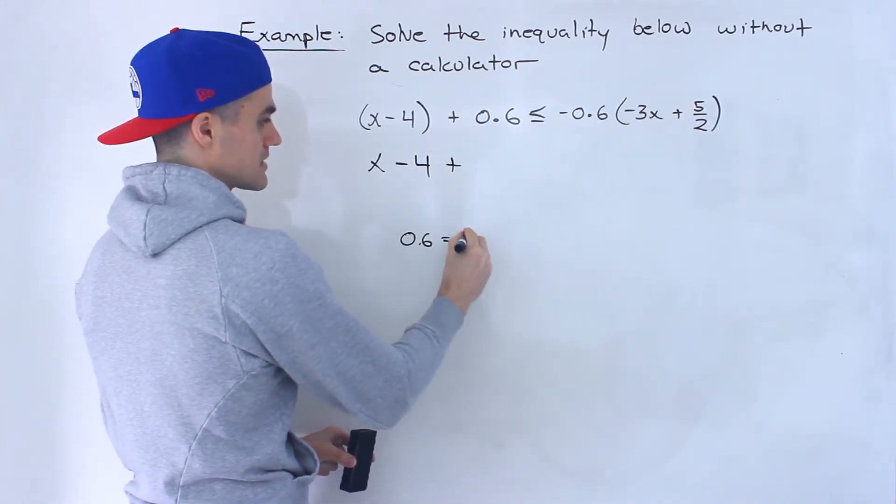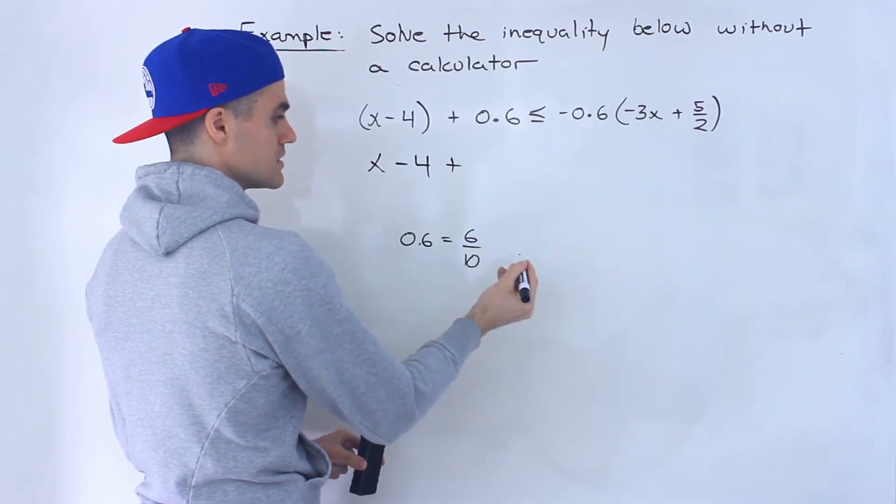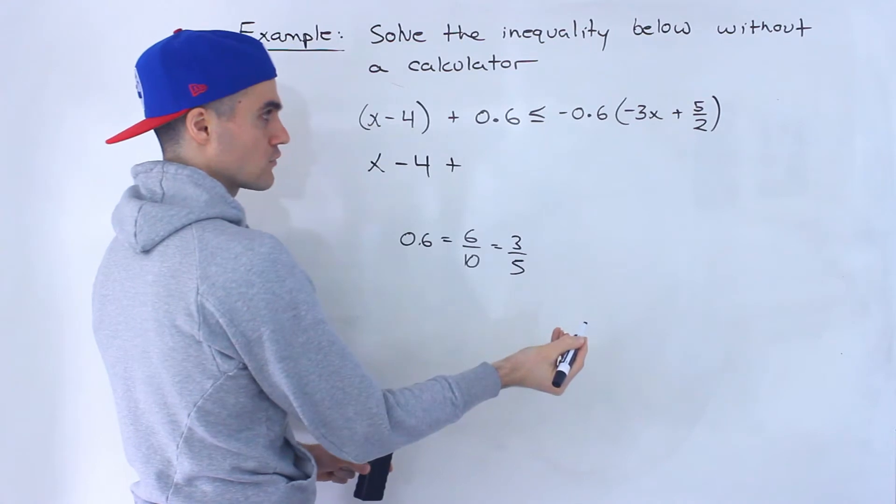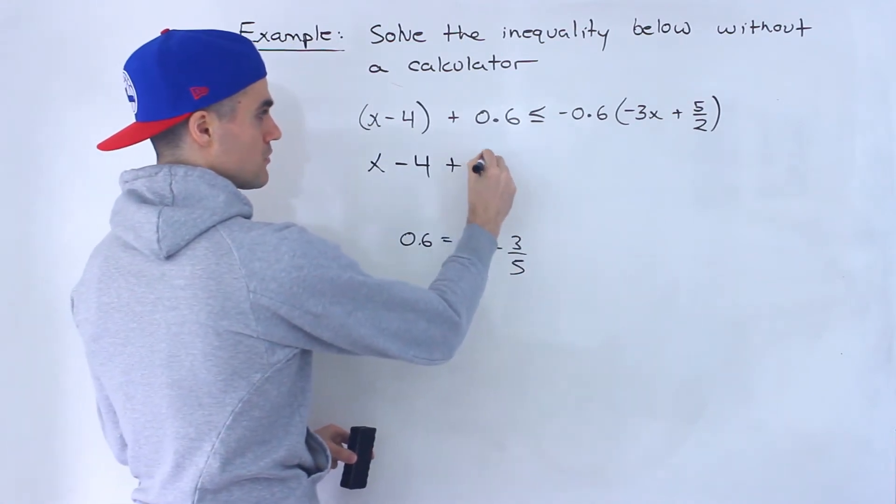Now 0.6, that's like 6 over 10, which is the same as 3 over 5. So this would be 3 over 5.